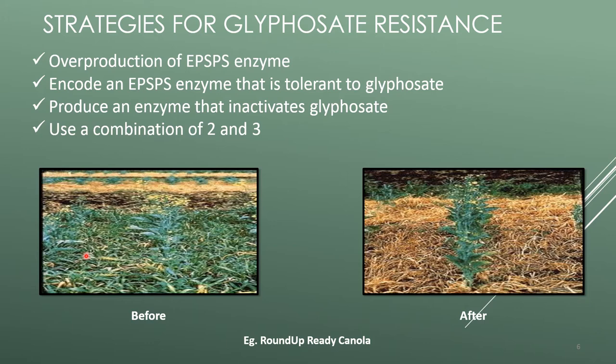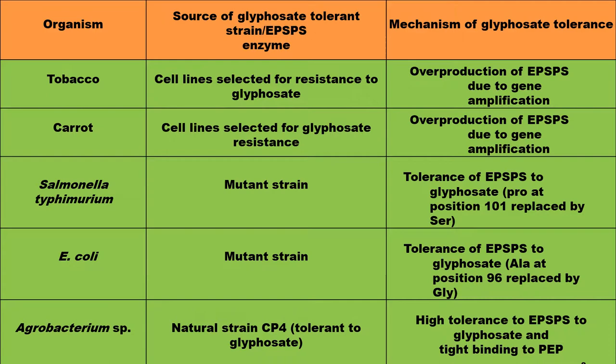After spraying herbicide into the field, you can see that only the transgenic plants are able to survive, whereas the weeds are already dead. These are some examples of transgenic plants which are tolerant to glyphosate.